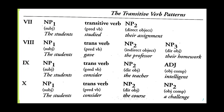Patterns seven, eight, nine, and ten all have a transitive verb as the main verb. In pattern seven, we have noun phrase one as subject, a transitive verb as predicating verb, and noun phrase two as direct object. Example: 'The students studied their assignment.'